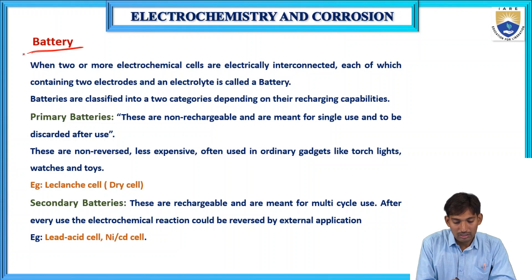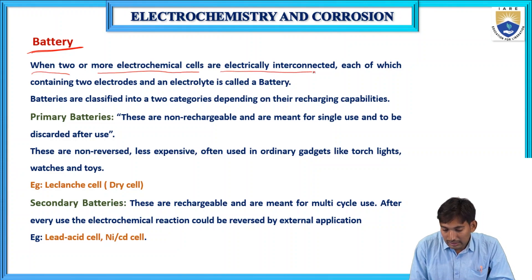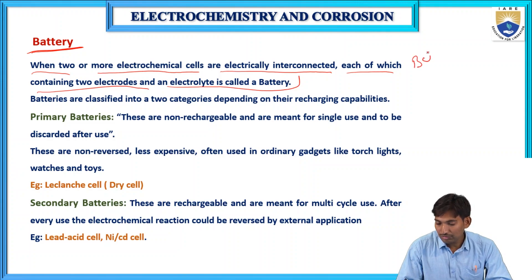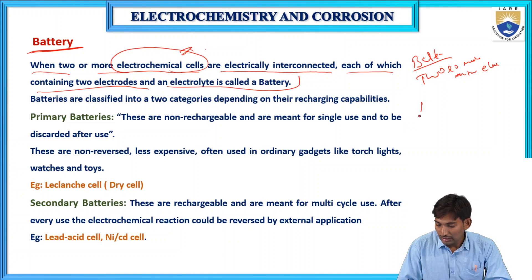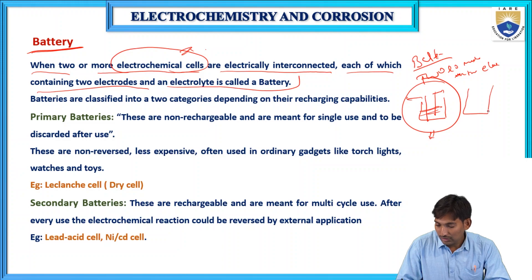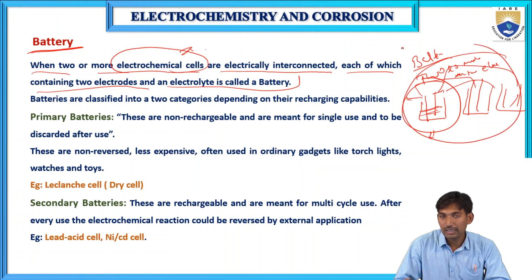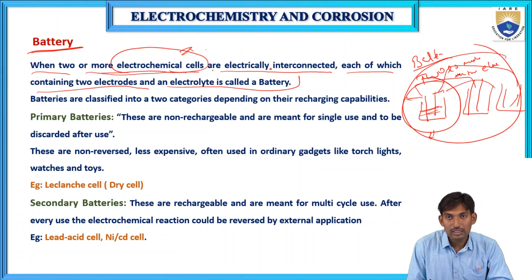What is a battery? When two or more electrochemical cells are electrically interconnected, each containing two electrodes and an electrolyte, it is called a battery. An electrochemical cell converts electrical energy into chemical energy or chemical energy into electrical energy, consisting of an anode, a cathode, and an electrolyte solution.